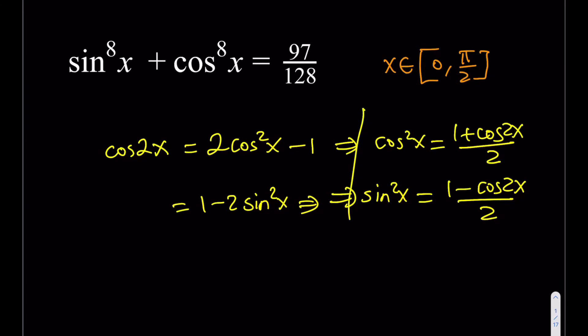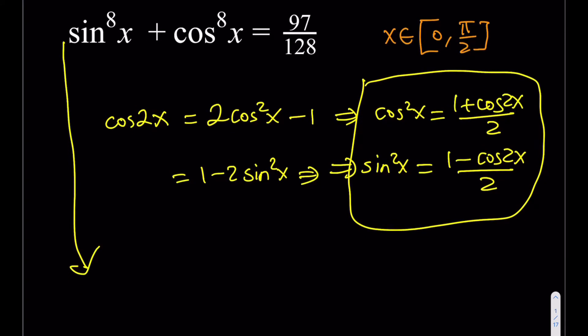Now, what I'm going to do is I'm going to use these formulas. But first, I have to manipulate my equation. How do I do that? I'm going to be writing this equation as sine squared x to the fourth power plus cosine squared x to the fourth power. And that's actually going to do the trick. Let's see how this proceeds.